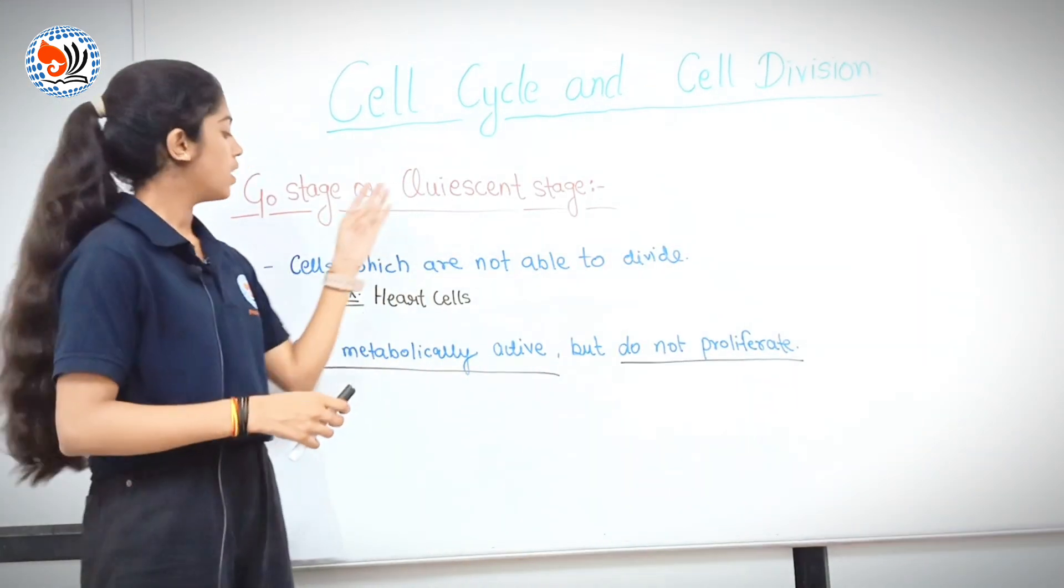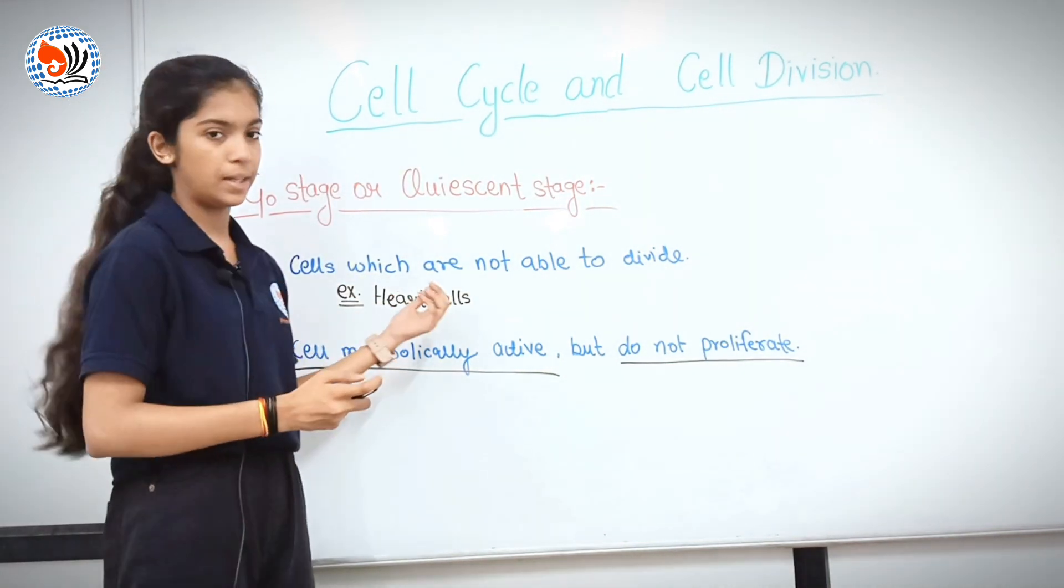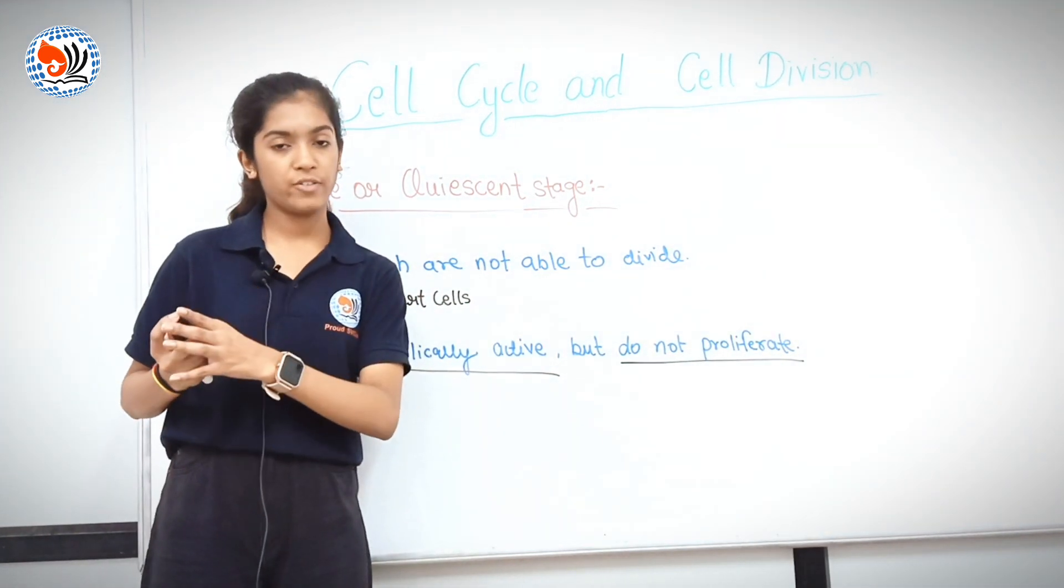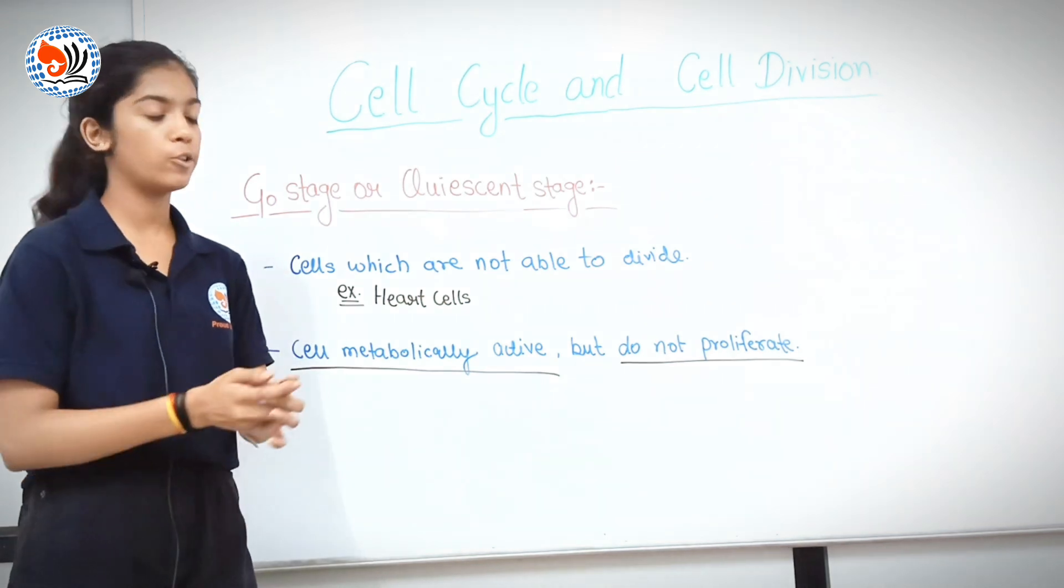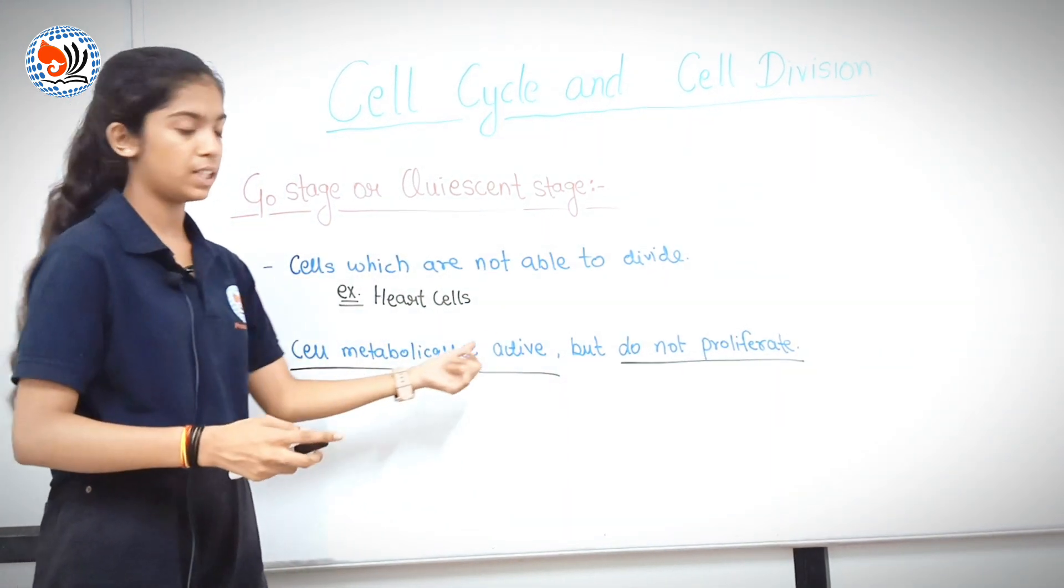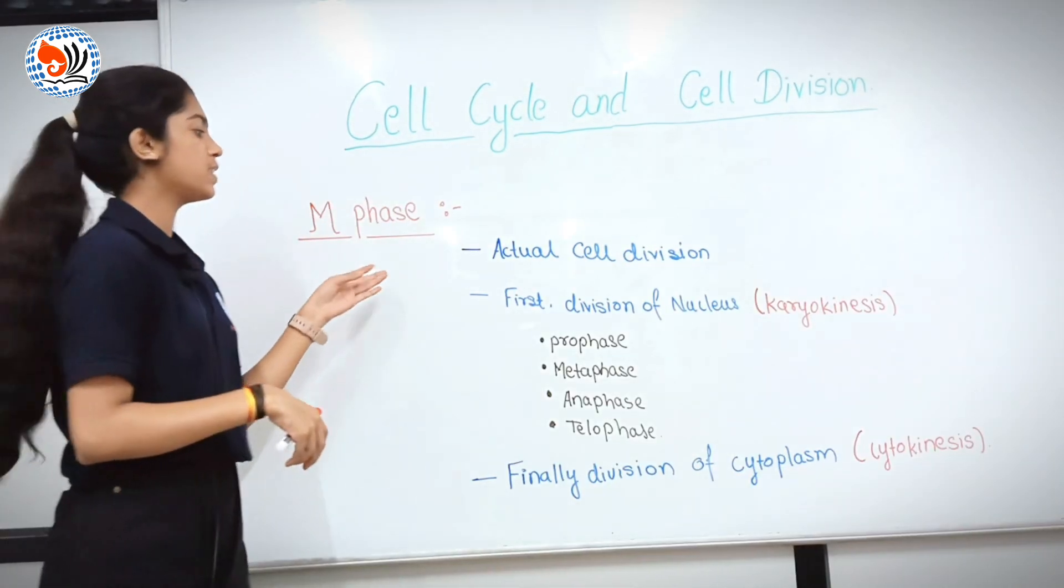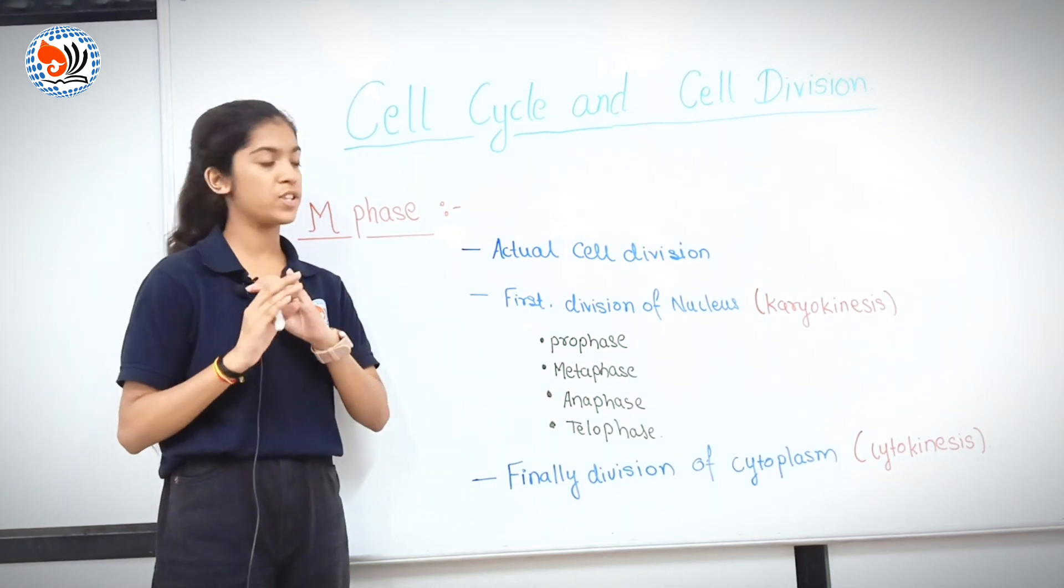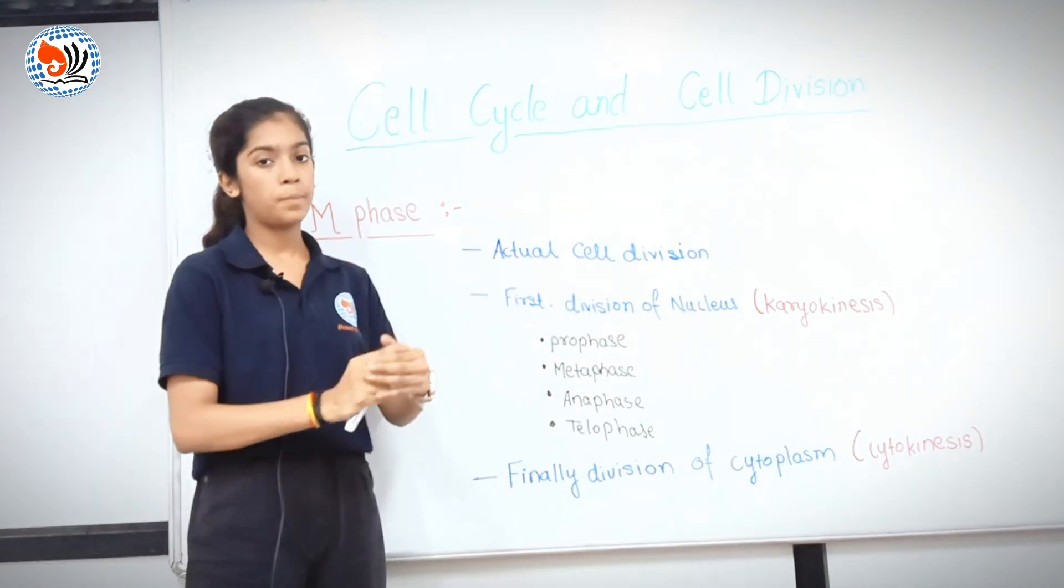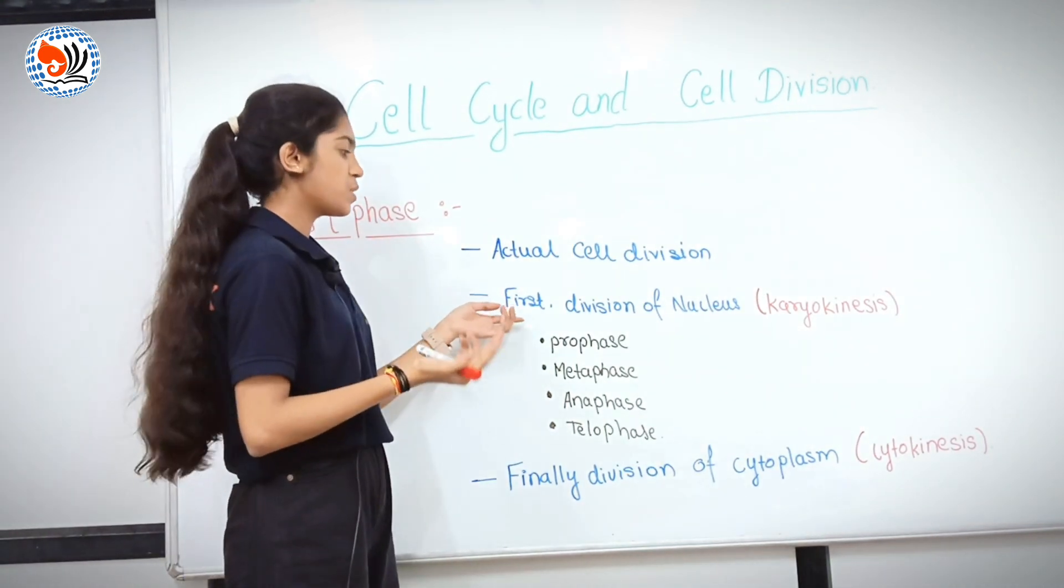G0 phase. It is a stage where some cells of the body are not able to divide. For example, heart cells. They exit the cell cycle to enter a quiescent stage. It is called the G0 stage. G0 stage cells are metabolically active but do not divide. This is the stage without active cell division.